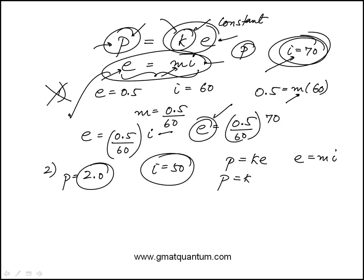So if I replace E in terms of I, what I'm going to get is P is K times M, some number, times I, which in other words means that the production index is directly proportional to the investment index. And so if I know P when I is 50, I can also find P when I is 70.